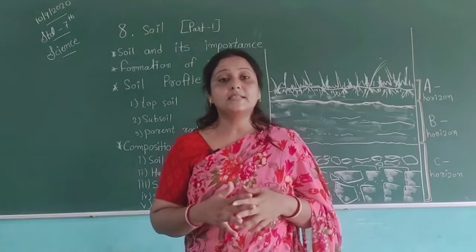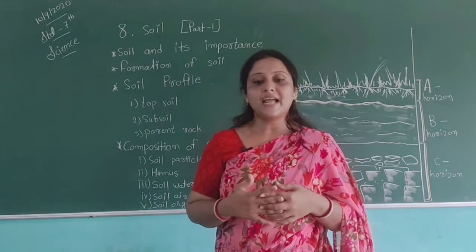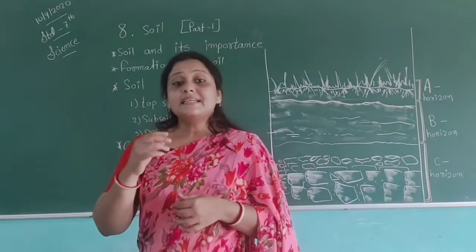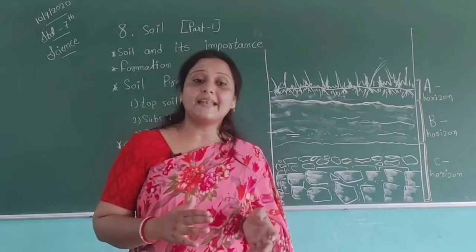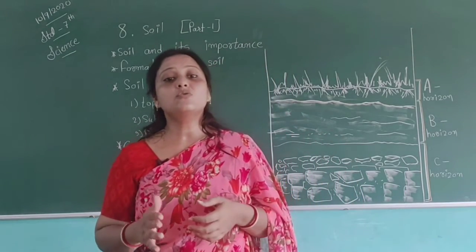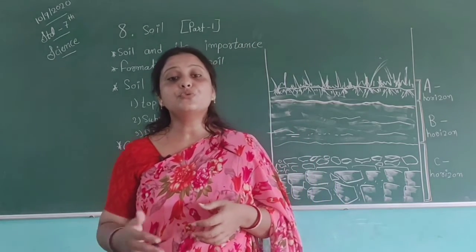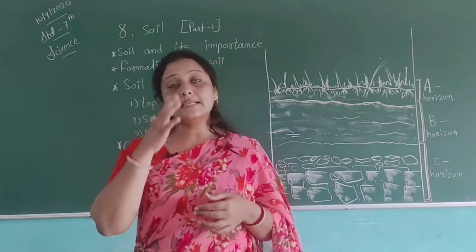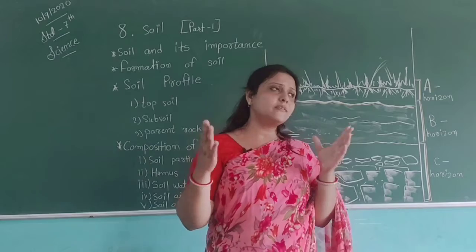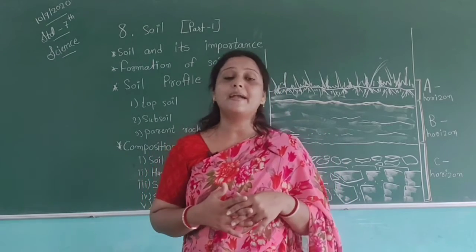Now, soil particles. Soil consists of particles of different sizes. Based on size, soil particles are broadly divided into four types as given in Table 8.1: gravel or stone, sand, silt, and clay. Their sizes are: gravel more than 2.0 mm, sand 0.05 to 2.0 mm, silt 0.002 to 0.05 mm, and clay less than 0.002 mm. Using this size classification, we can identify which type of particle is present in the soil.